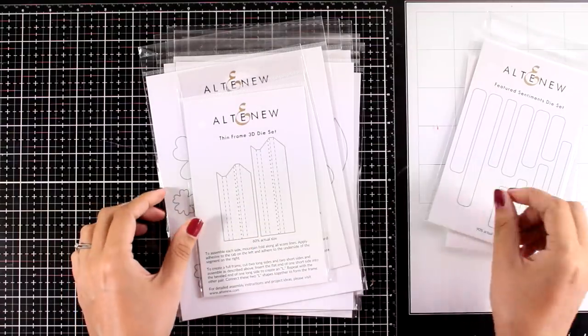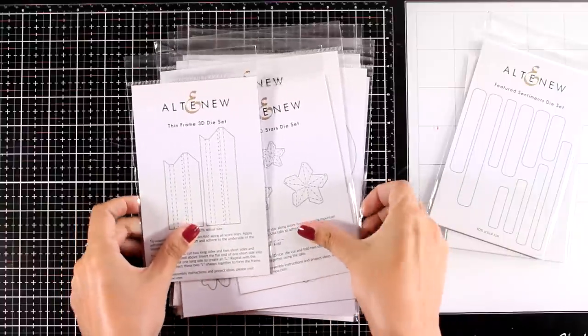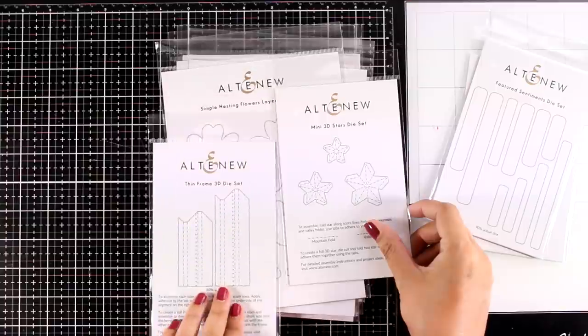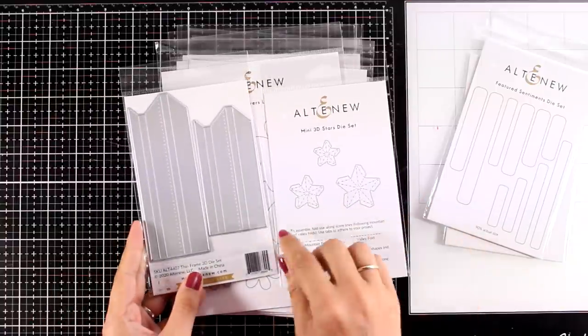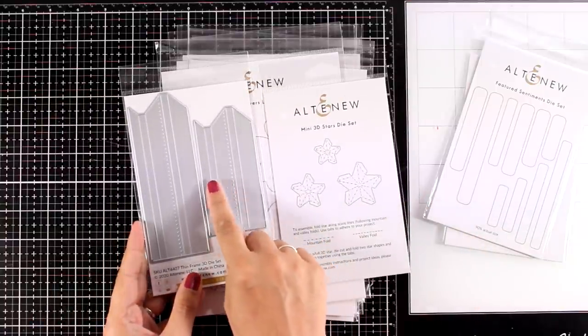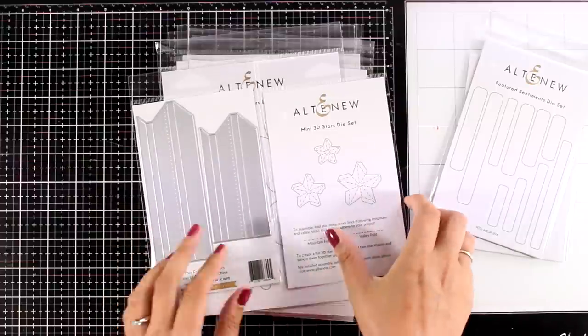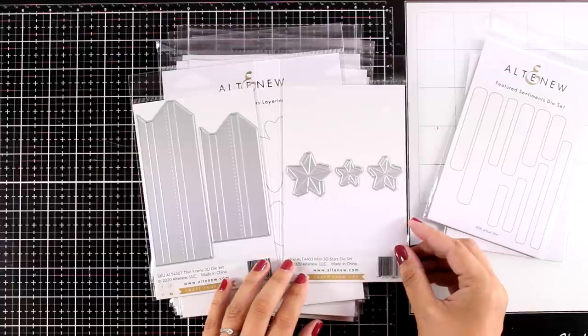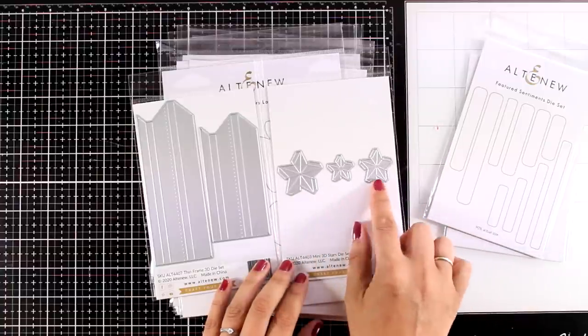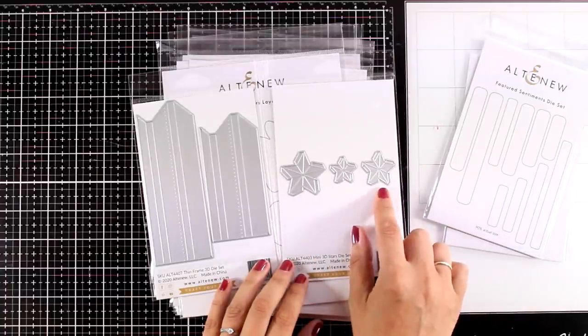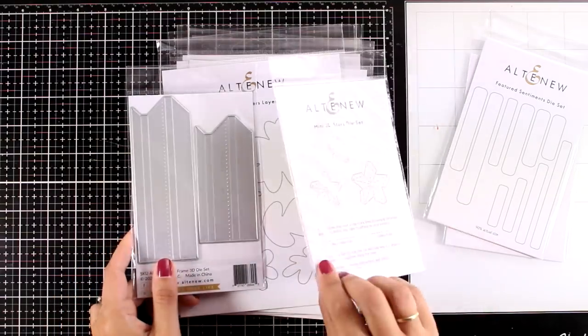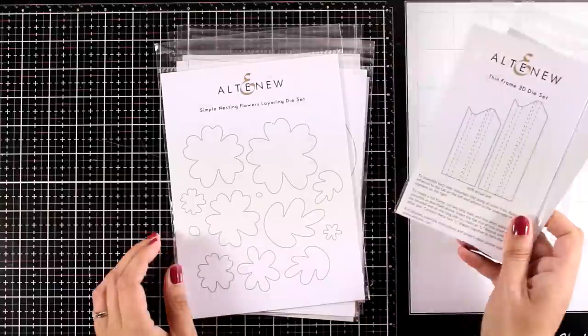They have also released a couple of thinner ones. So the first one is the thin frame 3D die set. If you put it together you can create a frame and there are videos that show you how you can do that. And the second one is the mini 3D stars die set. You can fold it to create a dimensional star that is flat on one side but you can use two of them together to make an all-around 3D dimensional star.